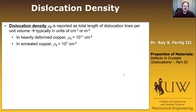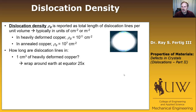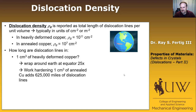That may not mean a lot, so let me phrase it differently. In 1 cubic centimeter of heavily deformed copper — something about yay big — if we were to take out all the dislocation lines and stretch them out, you'd be surprised to find it would actually wrap around the earth at the equator 25 times. So when we work harden a material by beating it with a hammer or rolling it, what we're really doing is adding 625,000 miles of dislocation line to it.